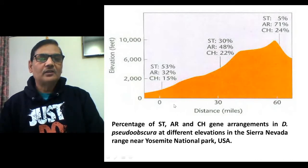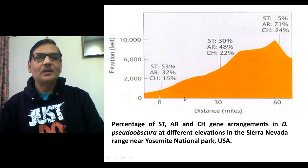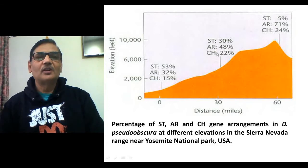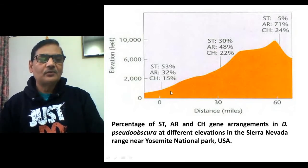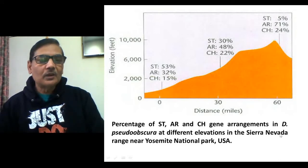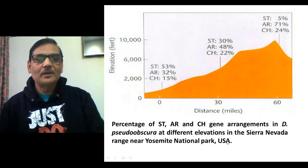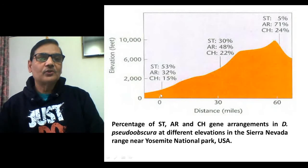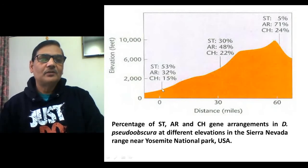What Dobzhansky did during the 1950s was perform a number of experiments using Drosophila pseudo obscura flies. He collected flies from three different portions or areas of the Sierra Nevada range near Yosemite National Park, United States of America — collecting flies from three different heights, as shown on the y-axis: 2,000 feet, 6,000 feet, and 10,000 feet.